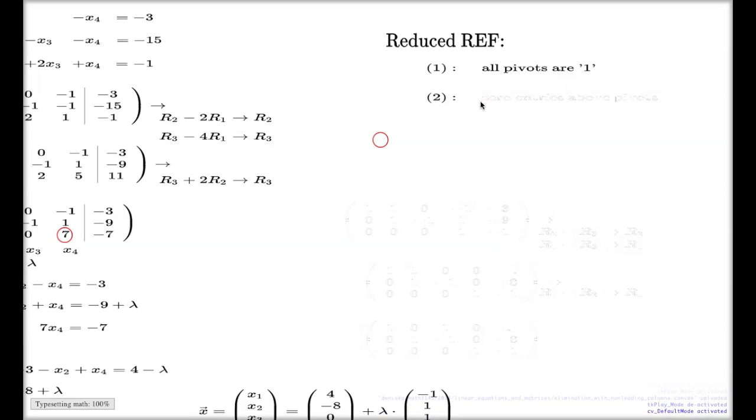And the second requirement for the matrix to be named reduced row echelon form is that you have zero entries above pivots. That's the second requirement which is needed to be satisfied in order to claim that the matrix is reduced row echelon form.